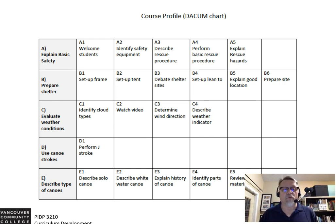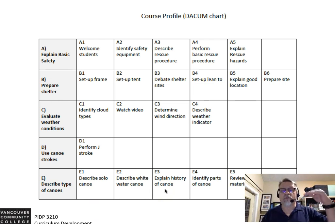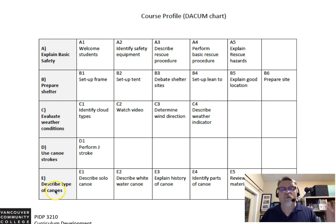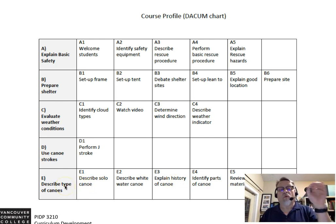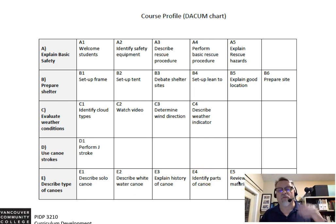In the final row, the notion of explaining the history of a canoe is at a higher level, so it's out of the scope of describing the types of canoes. The other objectives use describe, describe, identify, but explain is a higher level — the goal needs to be greater than or equal to the objectives. Also, E5, reviewing material, is an instructional technique.